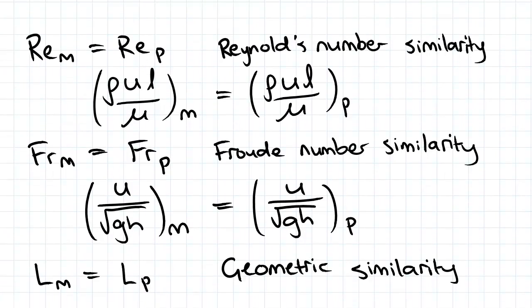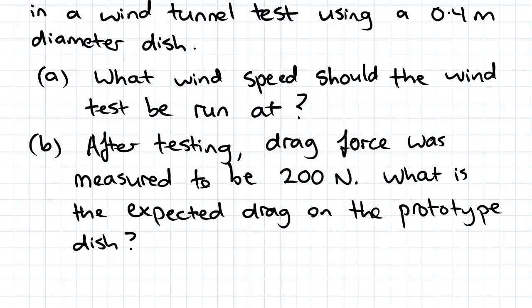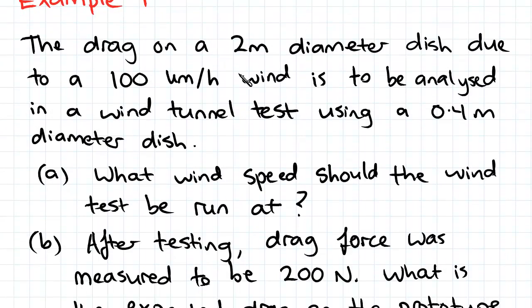So let's write down what we're given. These are our similarity terms which we're going to have to choose from, but going back to that later. For part A we've been given the prototype diameter DP is 2m, and model diameter Dm is 0.4m.